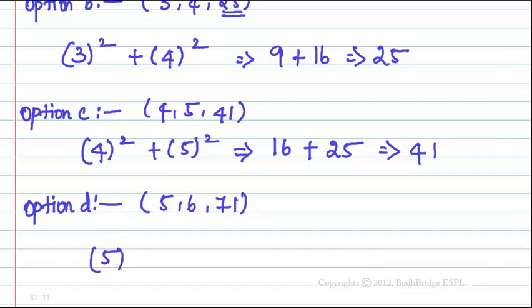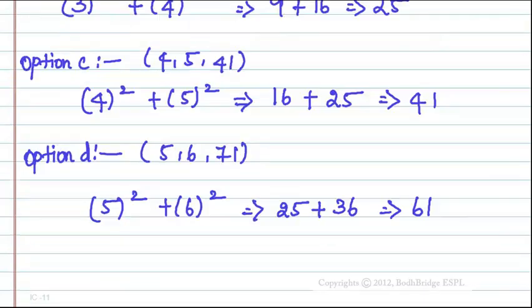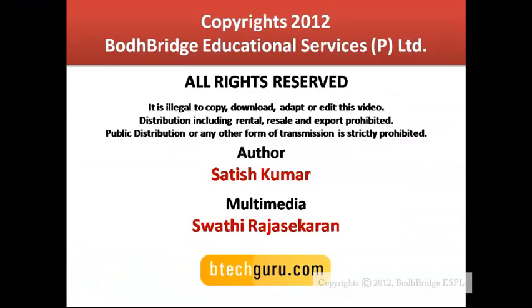For Option D: 5, 6, 71. Using the same pattern, 5 squared plus 6 squared equals 25 plus 36, which is 61 — not 71. So Option D is different from the other three terms; it stands out. Therefore, Option D — 5, 6, 71 — is the odd man out.